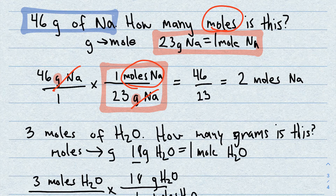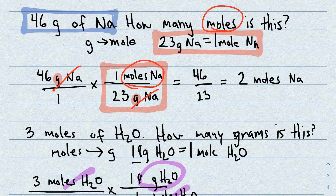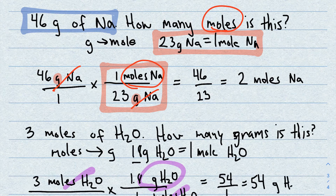We fill in the numbers from our equation: 18 grams on top, one mole on the bottom. We double-check — moles cancel, and we're left with grams of water on top, which is what we want. Multiply across the top: 3 × 18 = 54. The denominator is 1. So the answer is 54 grams of water.